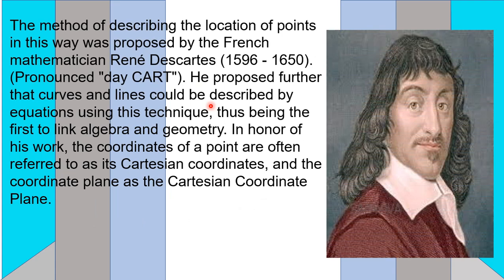This is a famous mathematician. The method of describing the location of points in this way was proposed by the French mathematician René Descartes. He proposed that curves and lines could be described by equations using this technique, thus being the first to link algebra and geometry. In honor of his work, the coordinates of a point are often referred to as its Cartesian coordinates and the coordinate plane as the Cartesian coordinate plane.